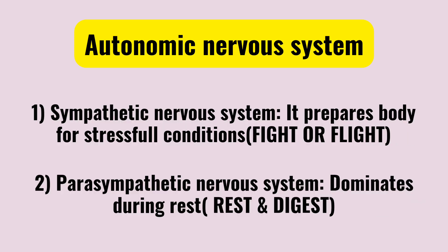The autonomic nervous system has two types: first, the sympathetic nervous system; and second, the parasympathetic nervous system. The sympathetic nervous system is responsible for the fight-or-flight response — when our body is in stressful conditions, it provides energy. The parasympathetic nervous system controls rest-and-digest conditions, maintaining a calm and stable state. This is all about the classification.